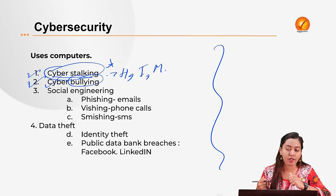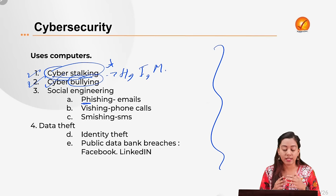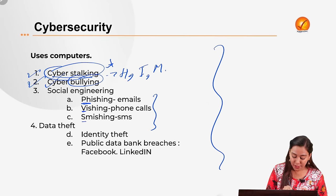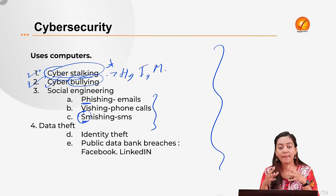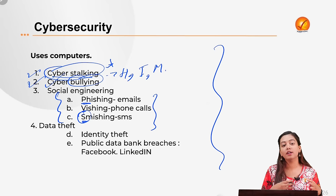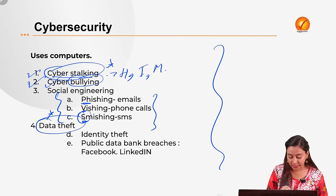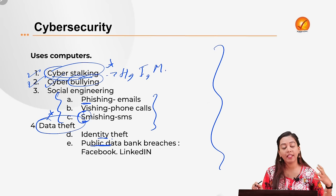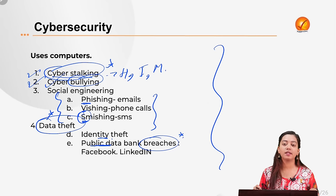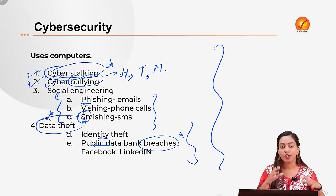Social engineering techniques vary by medium: manipulation via email is phishing; via voice calls it is vishing (V for voice); via SMS it is smishing. These terms are important and often confused, so remember the distinctions. Data theft and identity theft are also major concerns — public data bank servers like Aadhaar can be attacked. Breaches have been seen in cases like Facebook and LinkedIn, where public data was leaked for political gains. These are all considered cyber frauds.